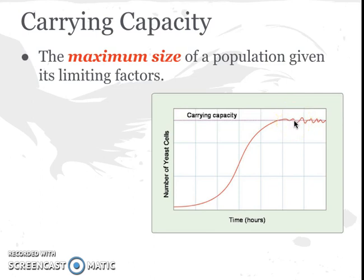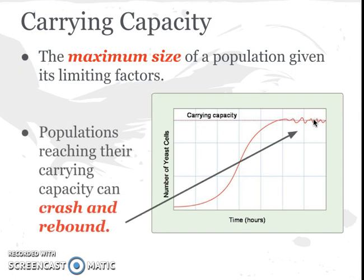Because there are enough resources for some individuals, the population size increases again, then drops again — there's an up-down pattern until it levels out around the carrying capacity. The carrying capacity is essentially the maximum size of a population that can be supported given its environmental factors. For example, growing yeast on a petri dish containing agar: the yeast quickly increase because there are plenty of resources, but eventually limiting resources like space and nutrients cause the population size to level off at its carrying capacity.